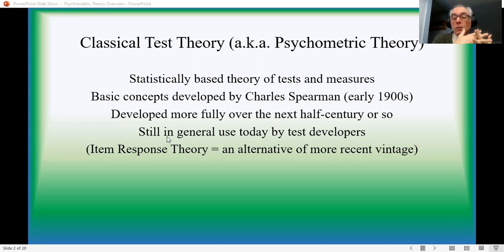What we now call classical test theory dates back to the very early 1900s and the work of the late great Charles Spearman. It's a statistically based theory, grounded in mathematics, ultimately in the general linear model. Spearman introduced the basic concepts, the most basic equations. The theory, of course, was not completely fully developed at that time. Over the next half century or more, more refinements were added. This is still probably the most widely used approach to the development and evaluation of psychological and educational tests. I should mention that there is an alternative approach nowadays known as item response theory. It's quite important, but we're not going to be going into it here.